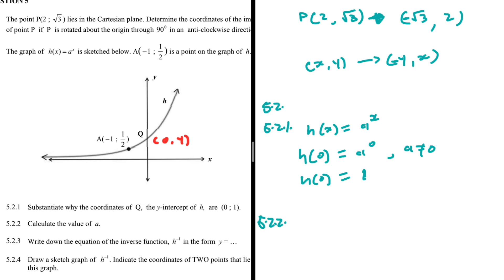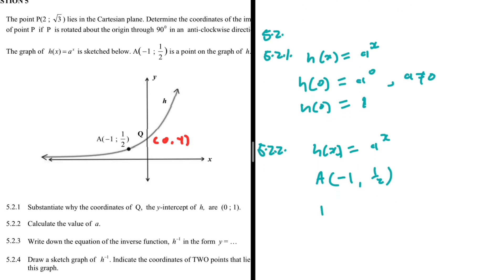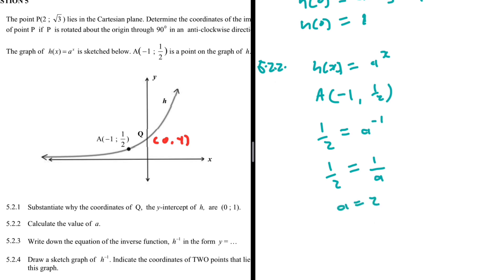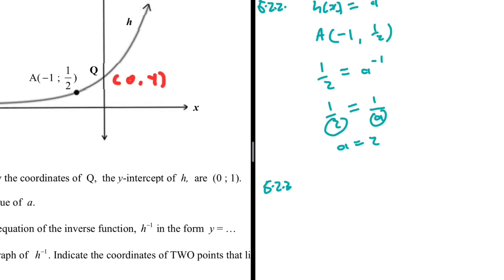For 5.2.2, calculate the value of a. We are given point A with coordinates (−1, ½) on the graph of h(x) = aˣ. Substituting: ½ = a⁻¹, which we can write as ½ = 1/a. It is easy to see that a = 2.